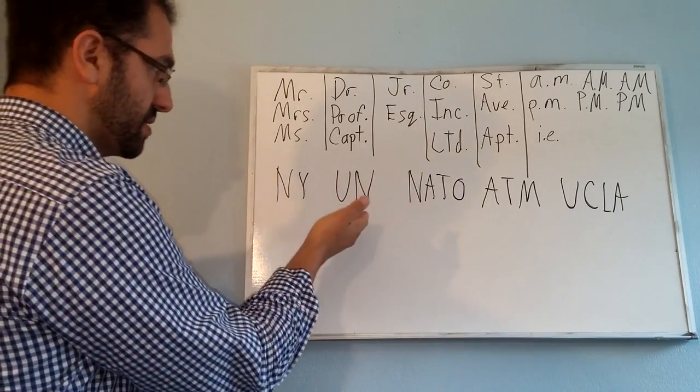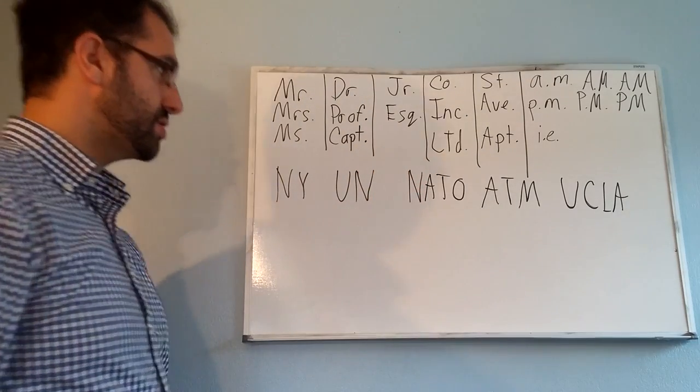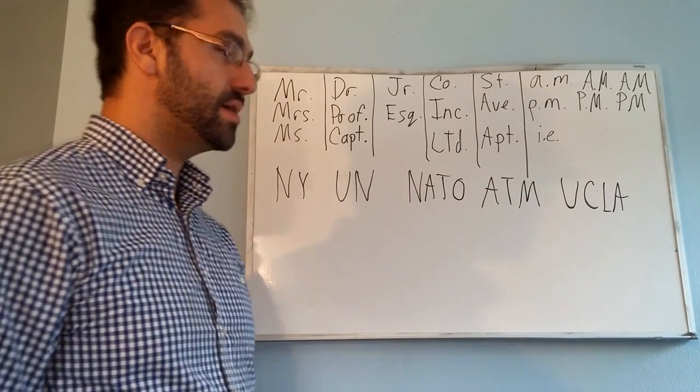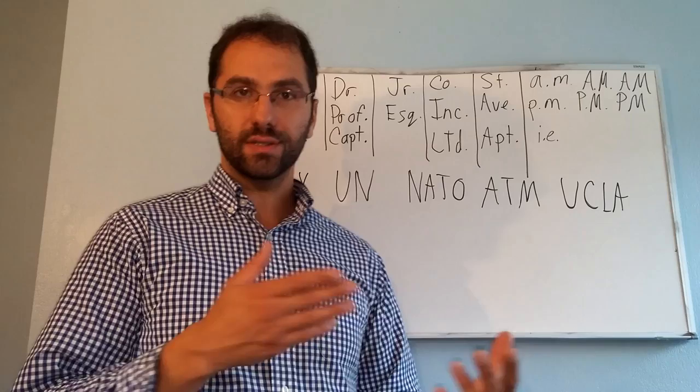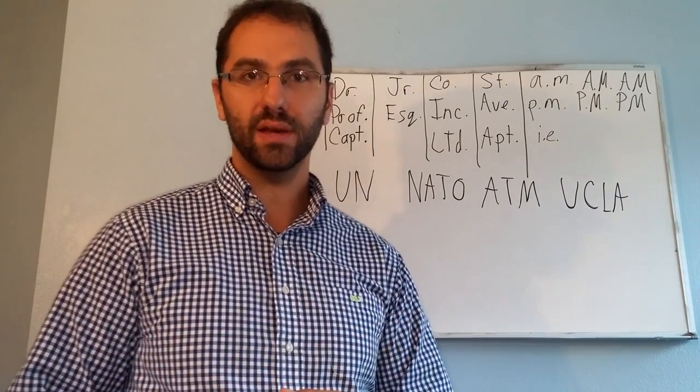NY for New York, UN for United Nations, NATO for North Atlantic Treaty Organization, ATM for Automated Teller Machine, or UCLA, University of California. And so you can see from here how abbreviations are used using periods and capital letters.